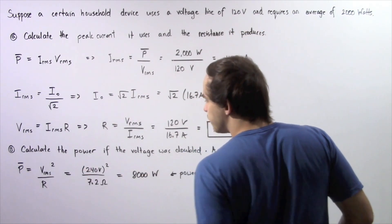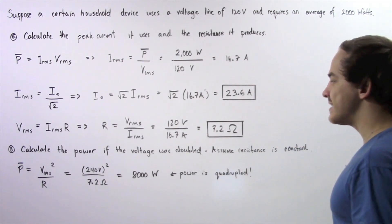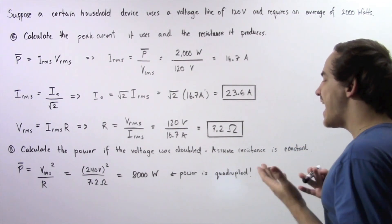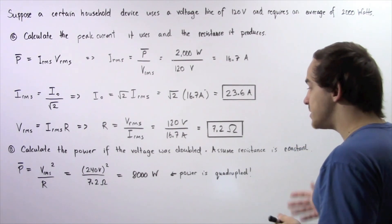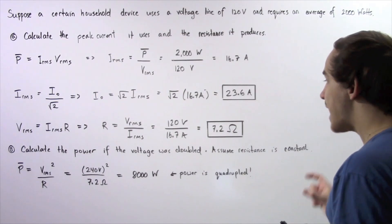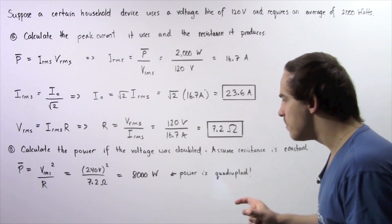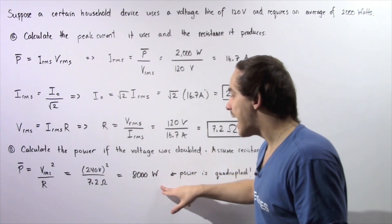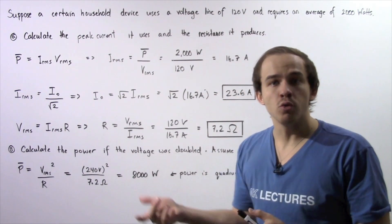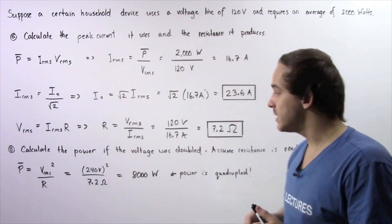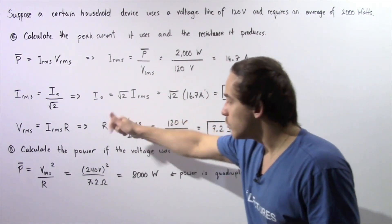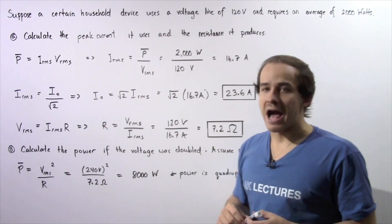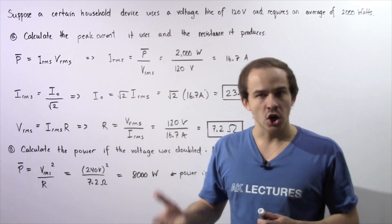So 240 volts squared divided by 7.2 ohms gives us 8,000 watts. We see that doubling the voltage quadruples the power output, because when we double the voltage, we also double the electric current.